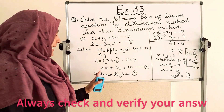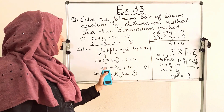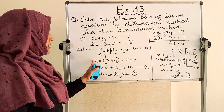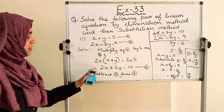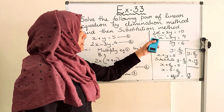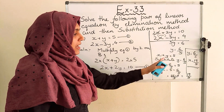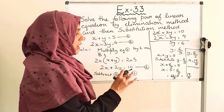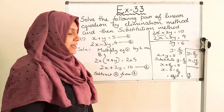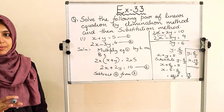So here, first we used the elimination method to eliminate variable x. For that we made the coefficients the same by multiplying the first equation by 2. While subtracting, we cancelled that variable and found the value of the other variable. After that, we substituted the value of y into one of the equations to find x. This is the method using elimination and then substitution.